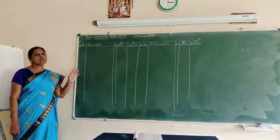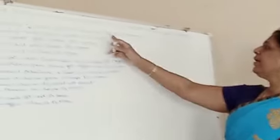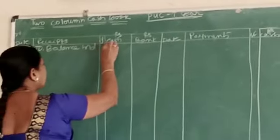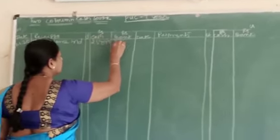They have given you a balance of cash 25,000 and bank 20,000. Come to the debit side, write the date 1/1/2020, two balances brought down. Cash is 25,000, bank is 20,000.